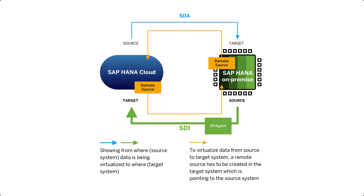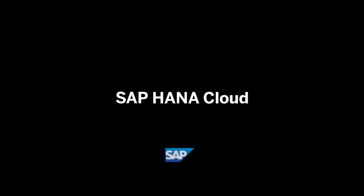And that's it! Now you know how to install, start, and configure everything you need to do in the DP agent to create a Smart Data Integration connection between SAP HANA on-premise and SAP HANA Cloud. Make sure to check out the other videos and tutorials on our website. Thanks for watching!